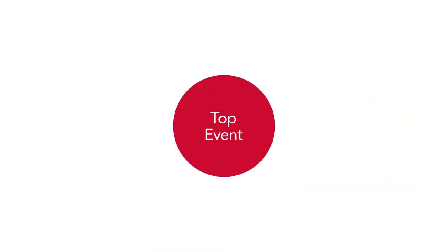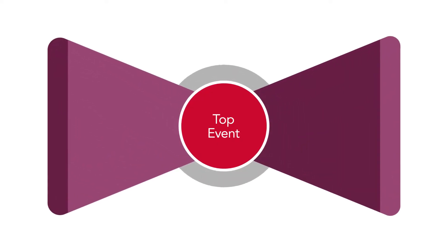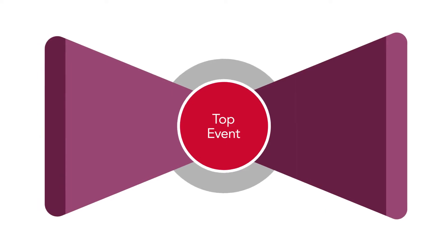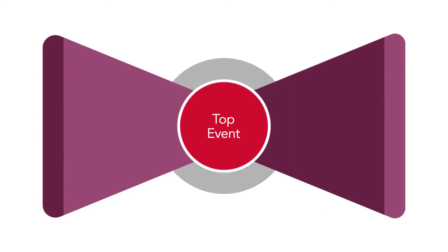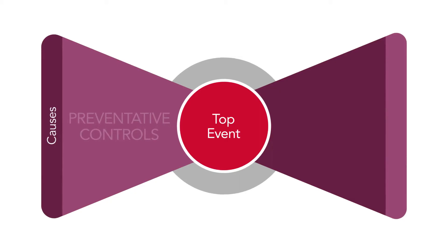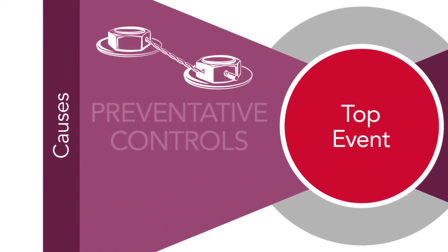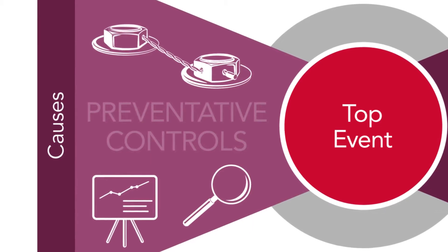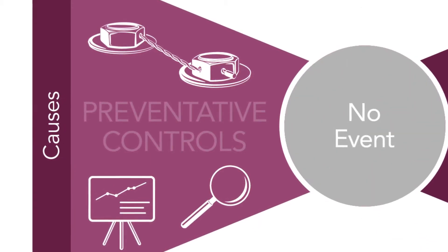For us to understand the controls, we first need to understand the bow-tie model. The bow-tie model is called a bow-tie because it looks like one. The left part of the bow-tie is reserved for the preventative controls, such as locking wire for nuts, inspections and training — essentially all the things we do to stop a dropped object from ever happening.